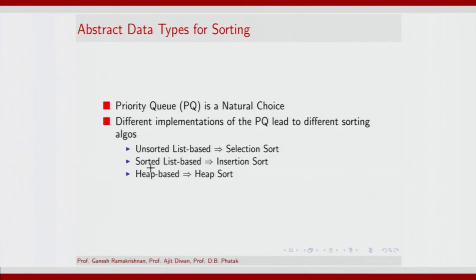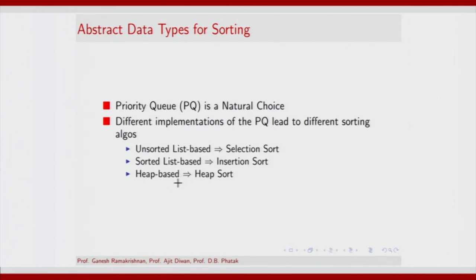You could also use a sorted list-based implementation of the priority queue — in such an instance the sorting algorithm is called insertion sort. You could replace the list with an array; you will have some slight efficiency improvement, but the order of complexity does not improve as such. A more interesting implementation of the priority queue is as a heap, and that gives you heap sort.